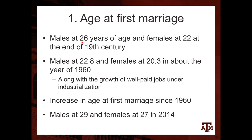This decline is related to the growth of well-paid jobs under industrialization — when you have a good economic environment, people tend to marry earlier than before and tend to have more children. They marry earlier and start having children earlier, which is why we see this decline related to the economic situation of the country at that time.